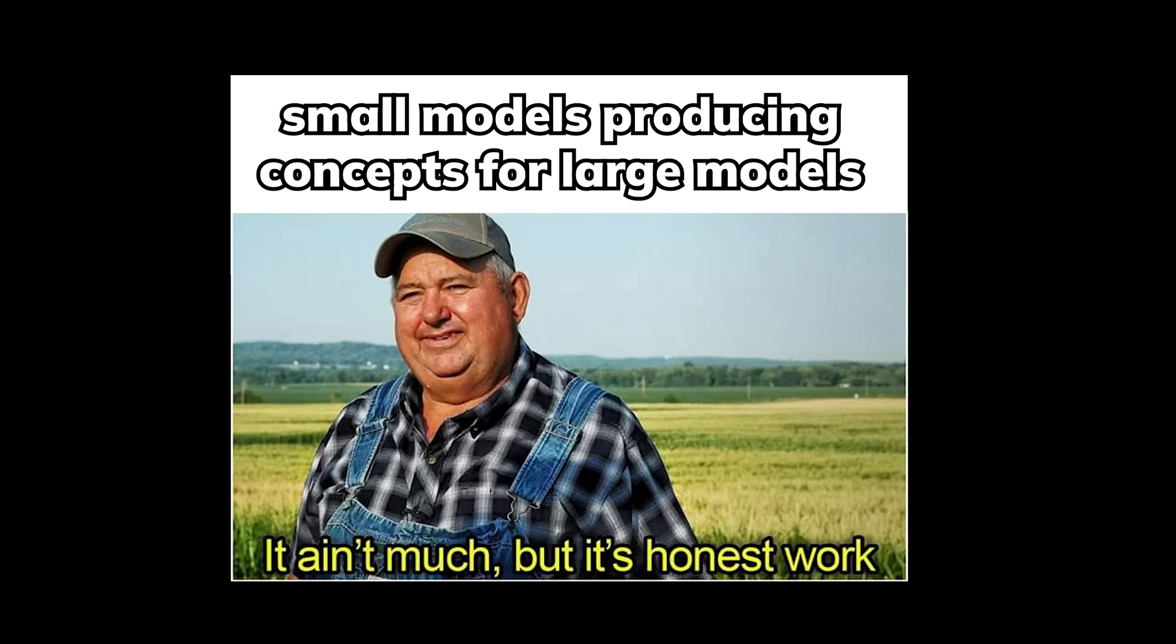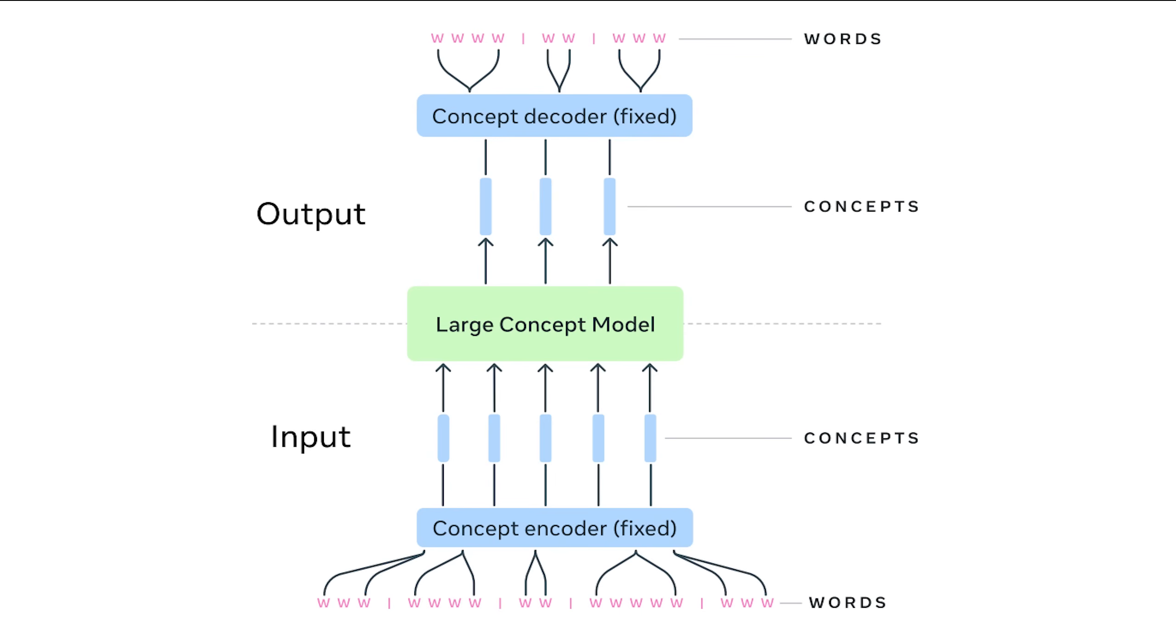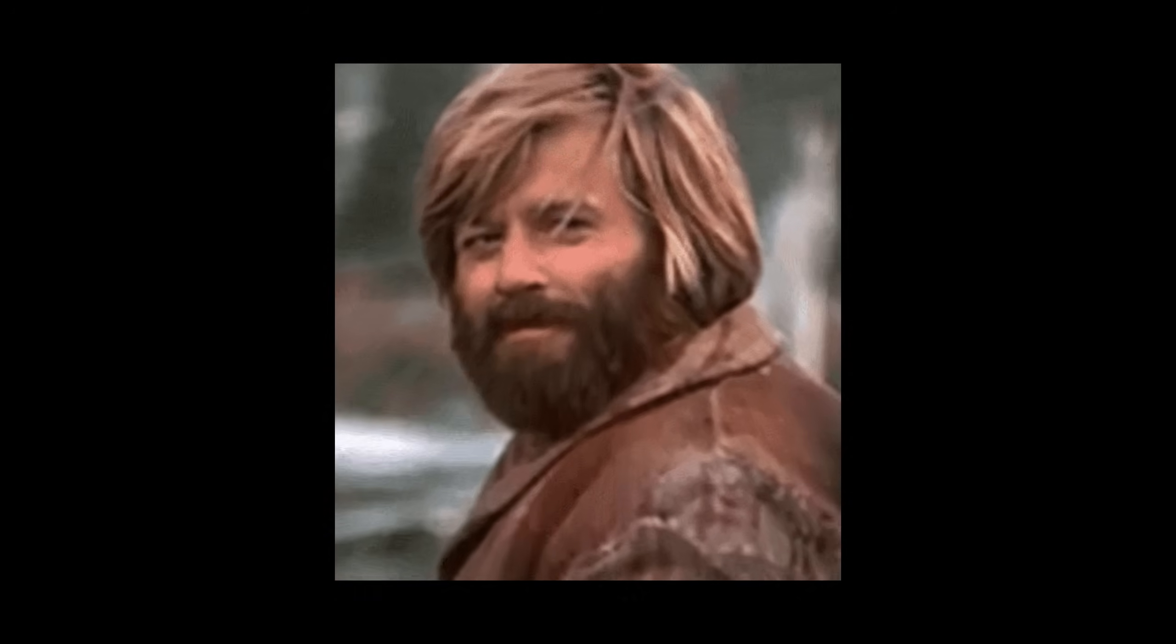You don't need the concepts to be exactly spot on to train a super powerful model. If the large and small model are both trained on the same data, even the concepts from a less sophisticated model would map the data similar enough to guide the bigger model effectively, which makes the idea of large concept models sound incredibly promising for practical applications.